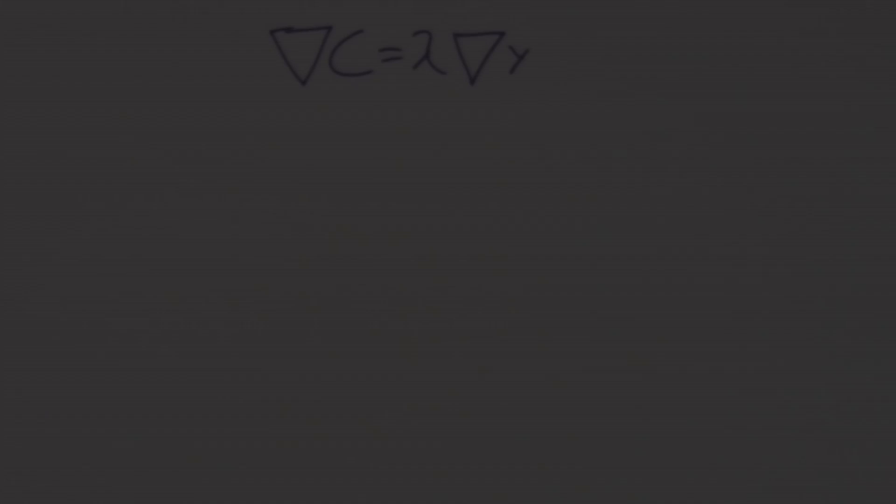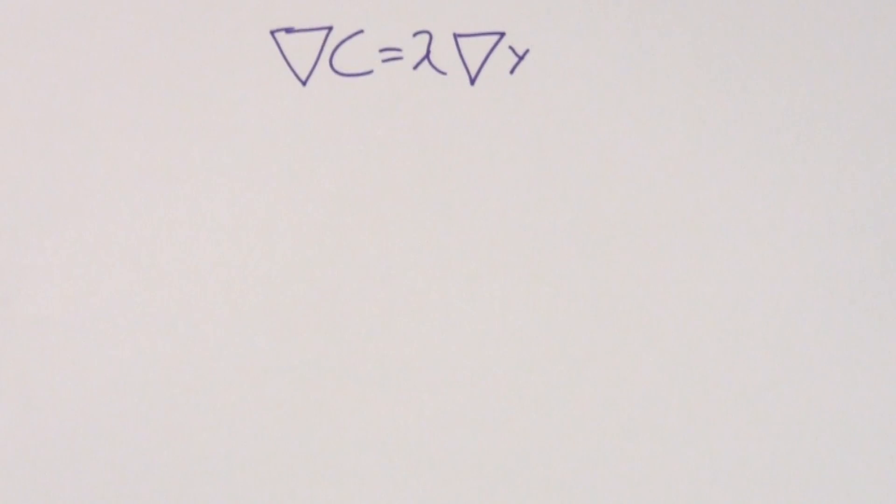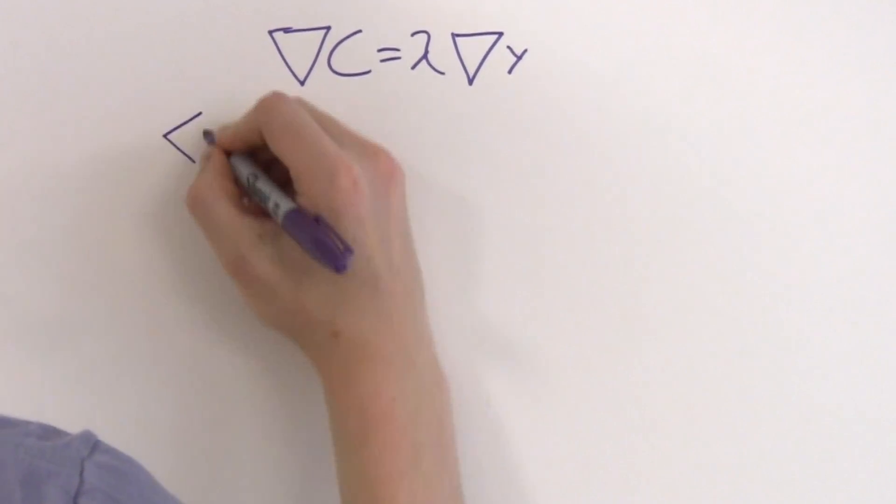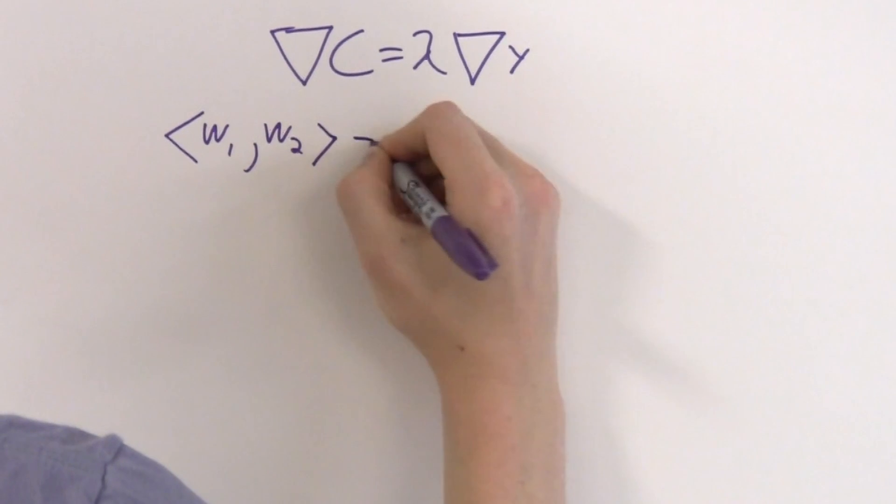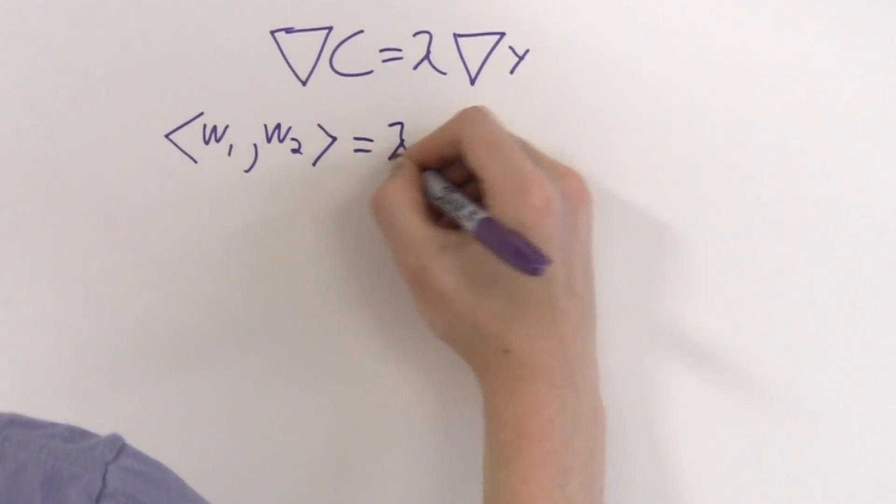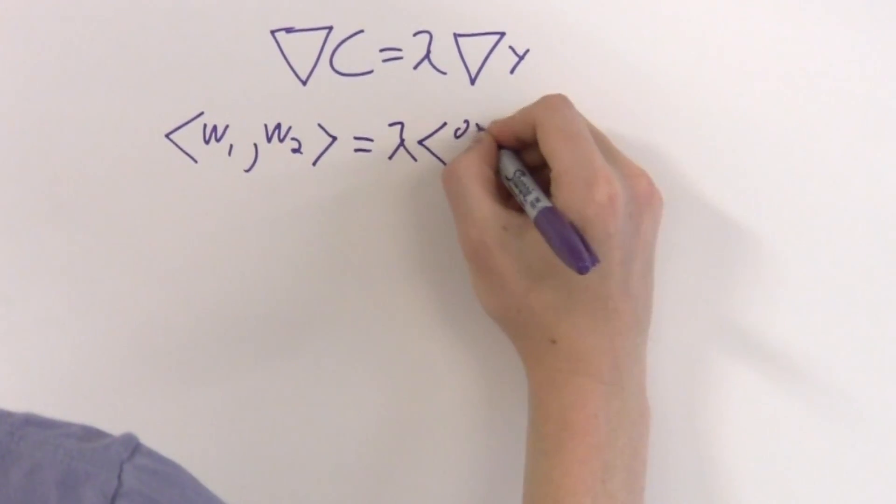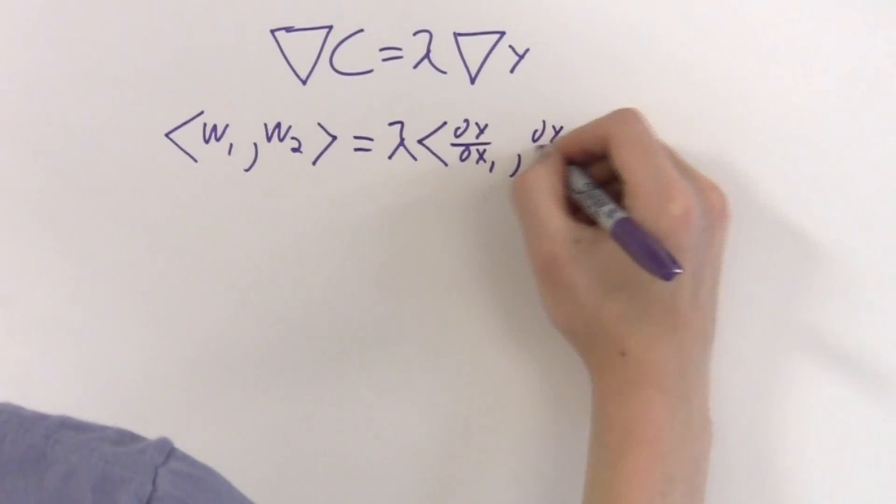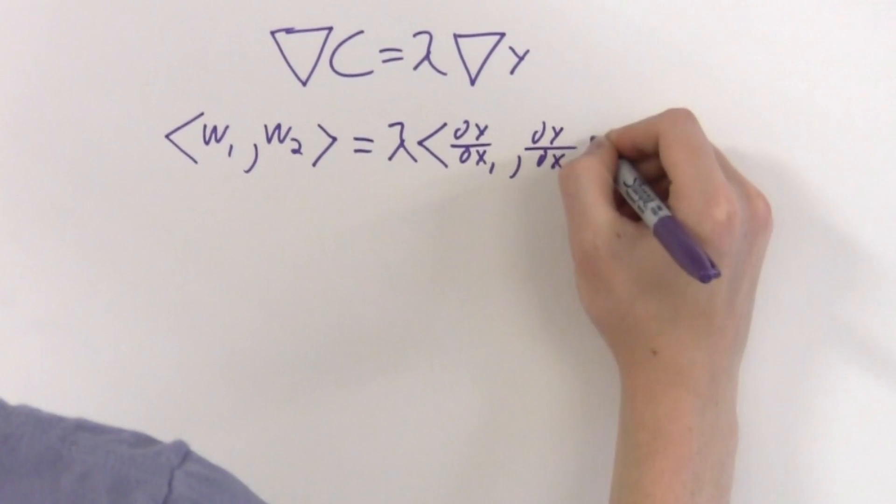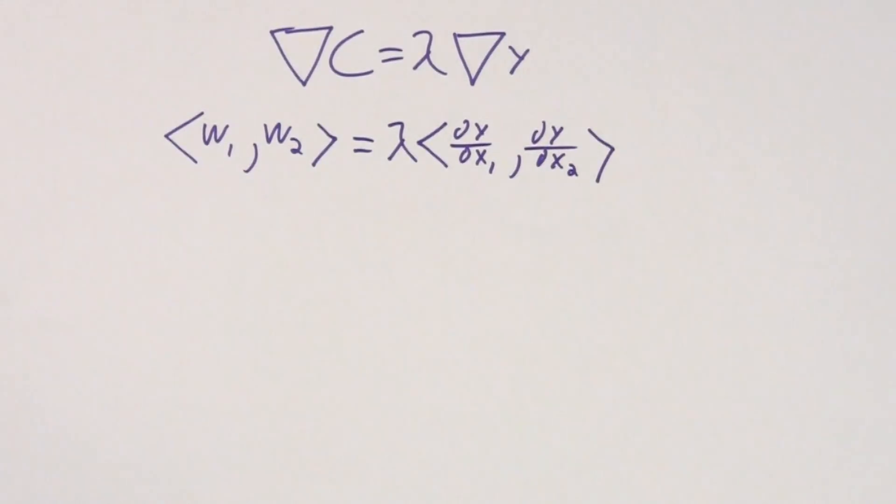This sounds like a Lagrange multipliers problem, so we can apply the method of Lagrange multipliers to get the gradient of c equals lambda times the gradient of y. We can evaluate the gradient of c pretty straightforwardly to get w1, w2 as our vector. We're trying to solve this problem for a generic production function y, so all we can say about the gradient of y is that it's the partial derivative with respect to x1 and the partial derivative with respect to x2.